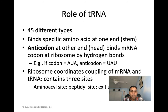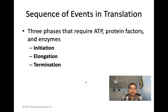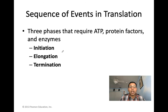The ribosome is like a vice — it has binding sites for mRNA and three binding sites for tRNA: the A site (aminoacyl site) for the incoming anticodon, the P site (peptidyl site) for the tRNA holding the growing polypeptide chain, and the E site (exit site) for the outgoing tRNA. Remember it as EPA or APE. There are about 45 different types of tRNAs. Translation, like transcription, requires ATP, protein factors, and enzymes.